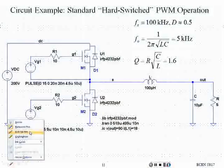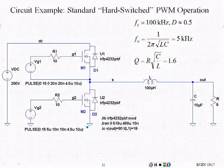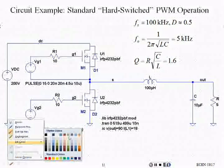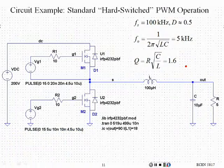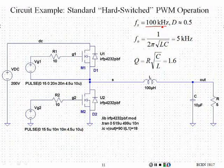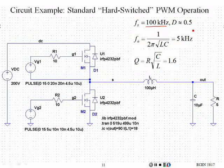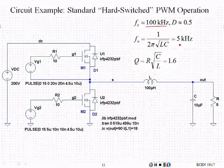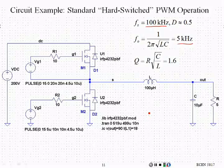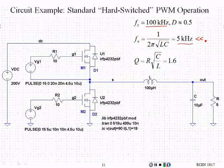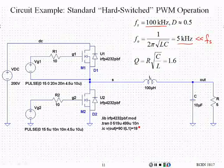Back to our original circuit example — the simple two-switch commutation. Let's see how we stand with respect to the corner frequency and the Q factor. The switching frequency is 100 kHz, and the simulation waveforms will use a duty cycle of 0.5. The corner frequency F0 is 5 kHz. Notice that this is far below Fs, so Fs is much greater than F0.